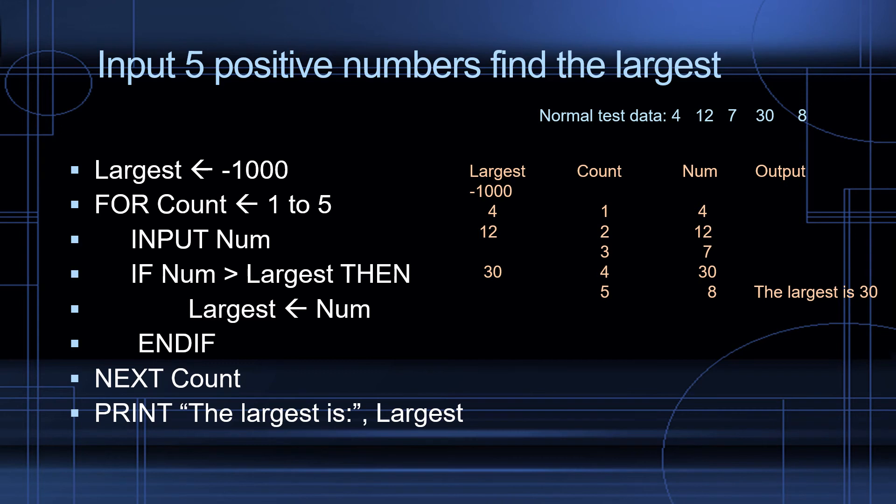Next count. Count equals 5. Input the fifth number, which is 8. Check is 8 larger than largest. It's not. We're finished with our loop. So now we're ready to print what's stored in largest. Print the largest is 30.